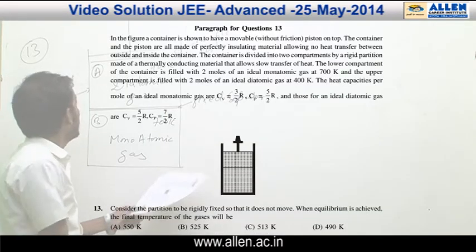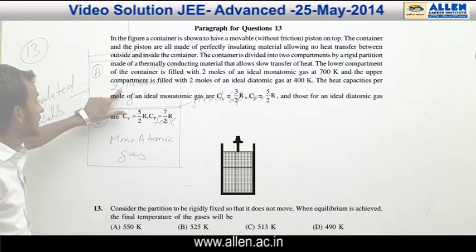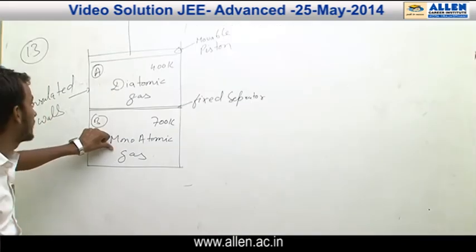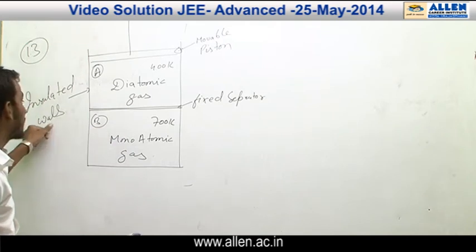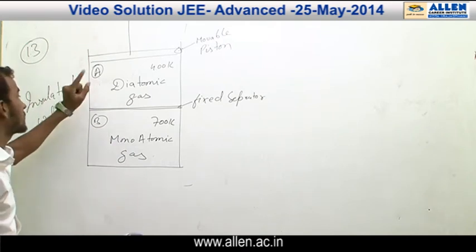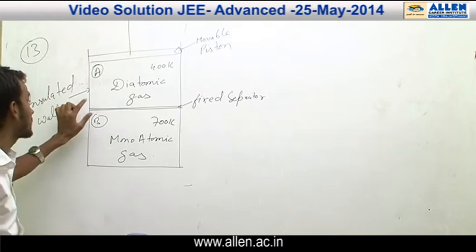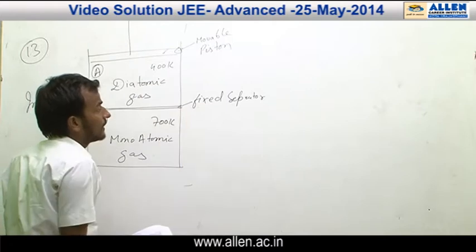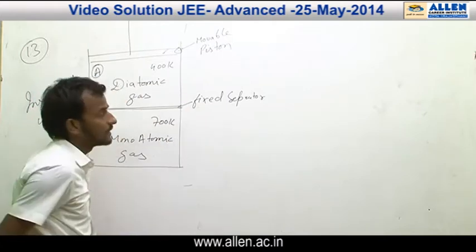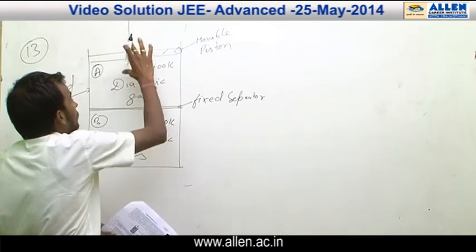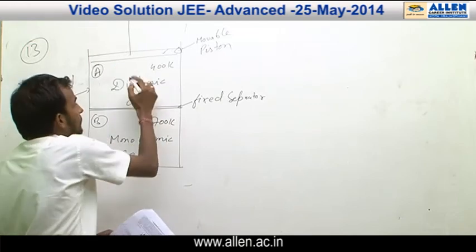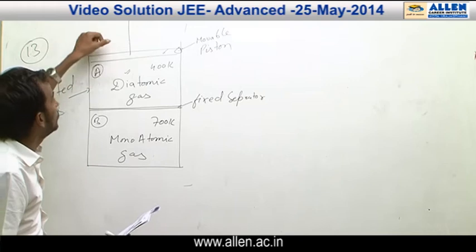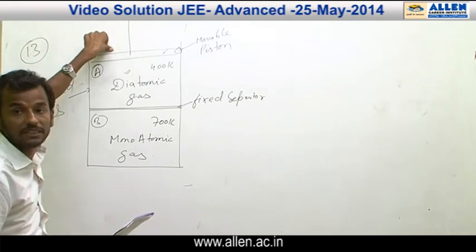In question number 13, there is diatomic gas in the upper part of the cylinder and monoatomic gas in the lower part. The walls are insulated so heat cannot exchange with the surroundings. The piston is movable and the separator is fixed. For gas A, the process is isobaric because the piston is free to move and the pressure at the piston is constant.